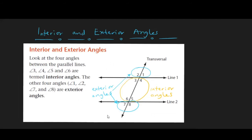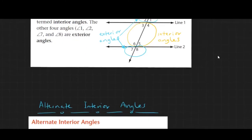Referring back to the transversal diagram, we can identify two types of angles: interior and exterior angles. Interior angles are the angles between the two parallel lines — angles 3, 4, 5, and 6 are all interior angles. Exterior angles are the ones outside the two parallel lines — so angles 1, 2, 7, and 8 are all exterior angles.